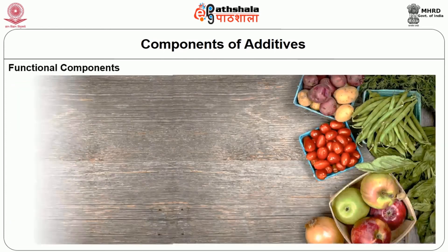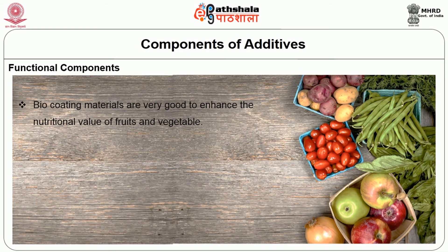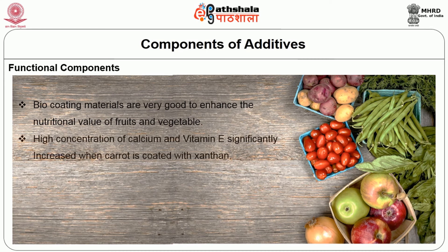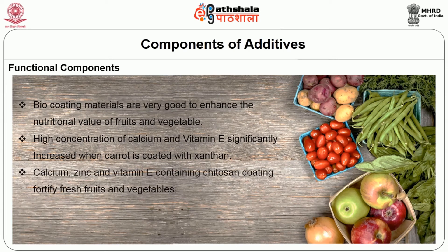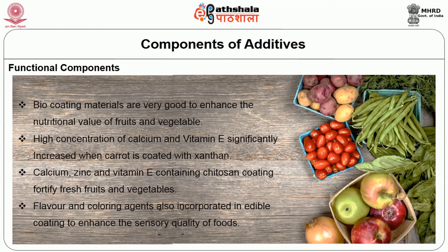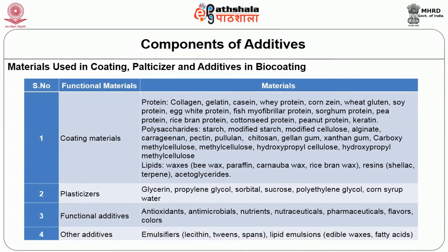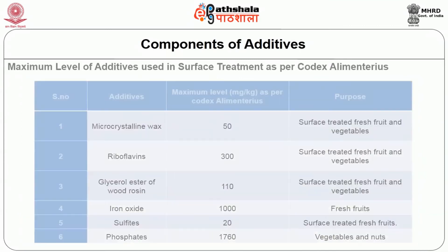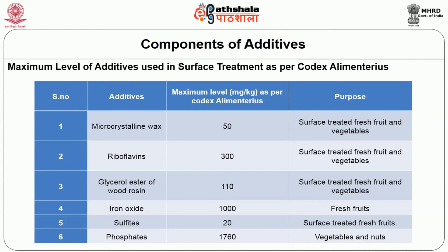The next component is functional components. Biocoating materials are very good at enhancing the nutritional value of fruits and vegetables. High concentration of calcium and vitamin E significantly increased when carrot was coated with xanthan gum. Calcium, zinc, and vitamin E-containing chitosan coating fortifies fresh fruits and vegetables. Flavor and coloring agents are also incorporated in edible coating to enhance the sensory qualities of foods. Polysaccharides, proteins, and lipid materials act as coating materials in most food applications. The maximum level of additives used in surface treatment as per Codex Alimentarius Commission includes microcrystalline wax, riboflavin, glycerol esters of wood rosin, sulfites, and phosphates.